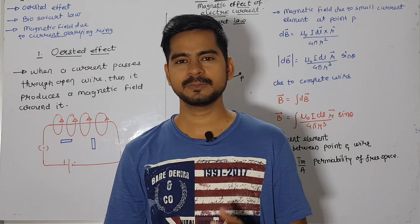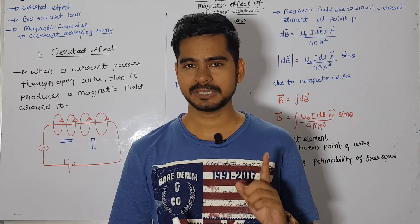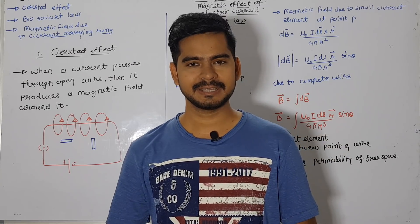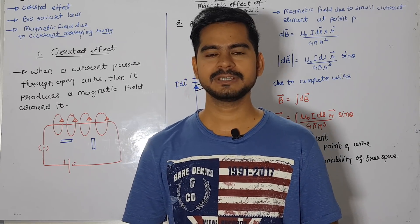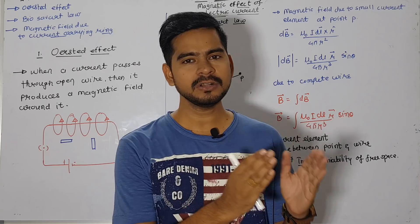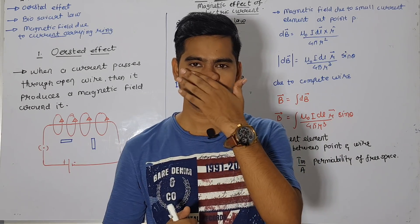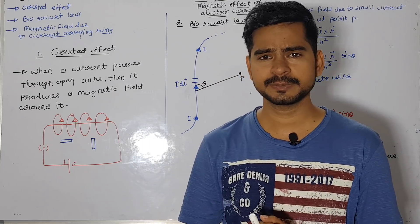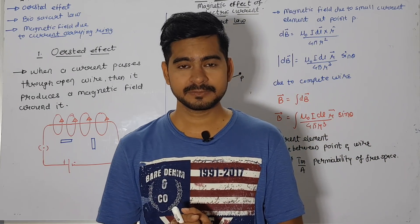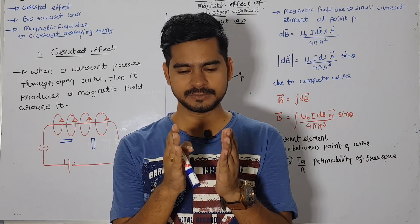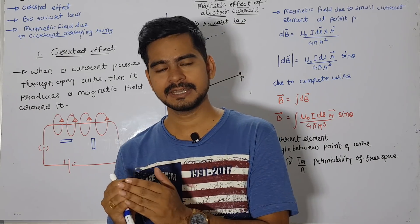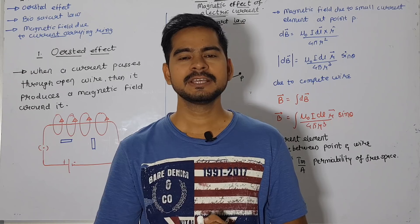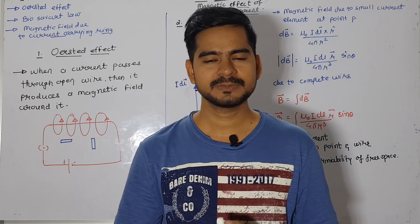In all the previous videos of this channel we were discussing the first chapter — electric charge and electric field — electrostatic potential and capacitance, and also the third chapter that was current electricity. All the chapters are available as a playlist. Go to the YouTube search box, write 'Sachin Sir Physics,' go to the channel's playlist section to find all those chapters.